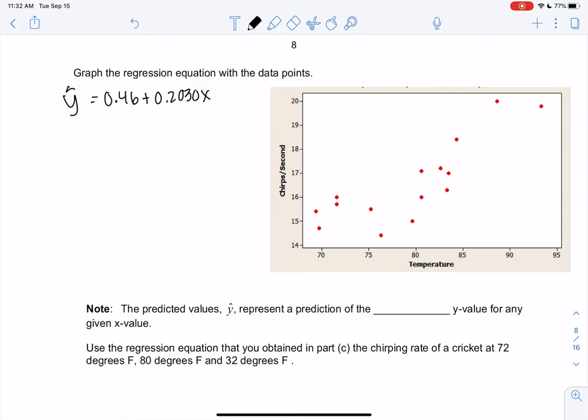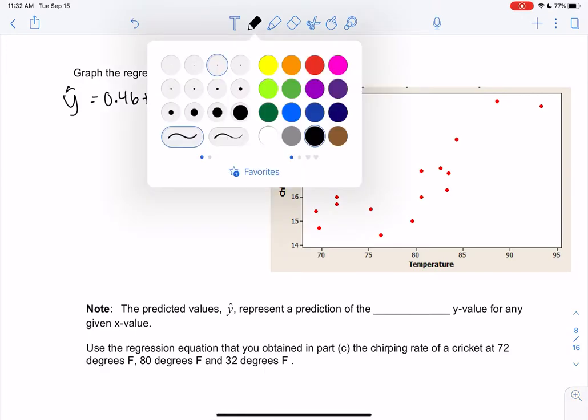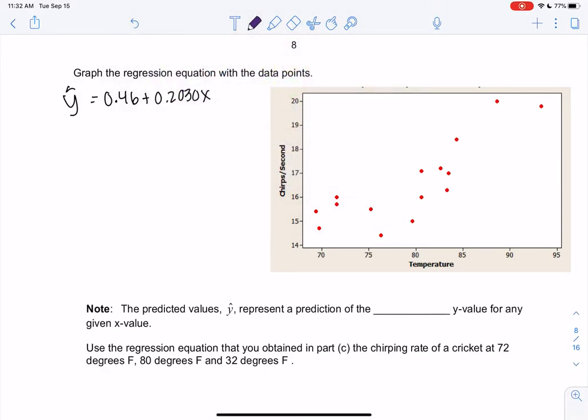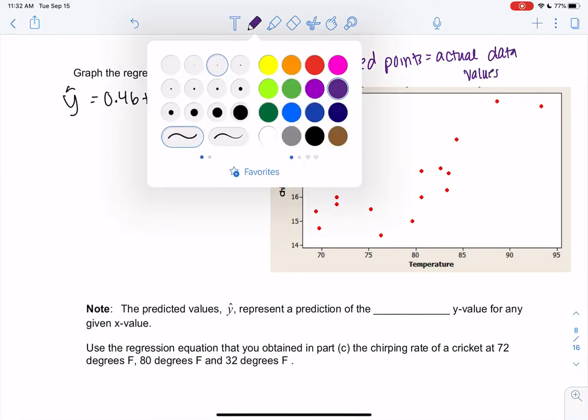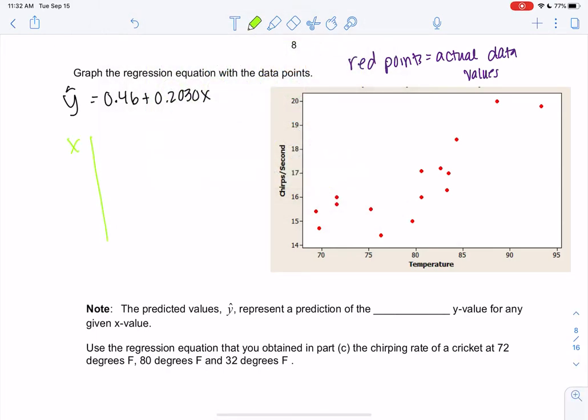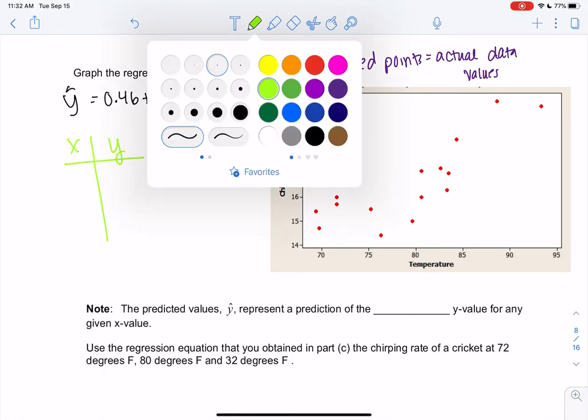So if we want to graph a line, I like to use a different color so that they don't mix with the actual data points. The red dots are the actual data values. So I want to use something different—I usually use an x in a different color. Let's use green.